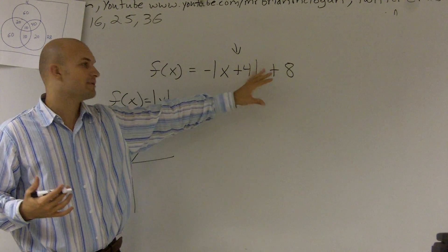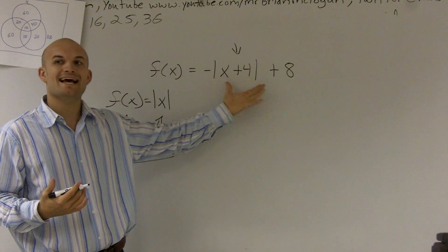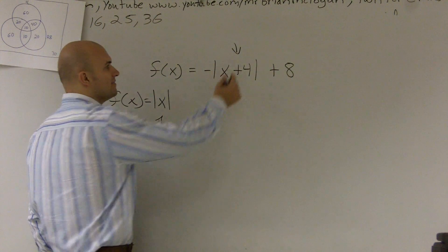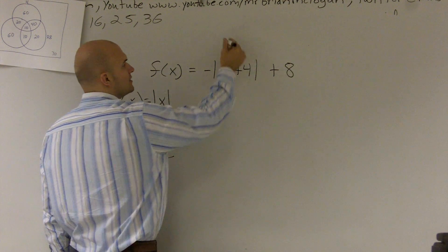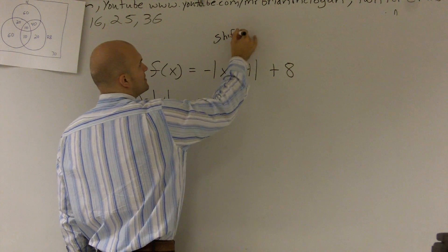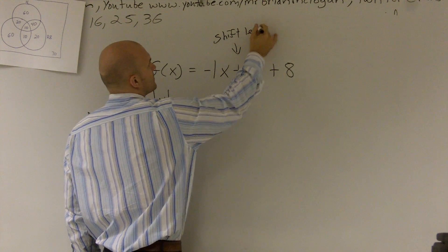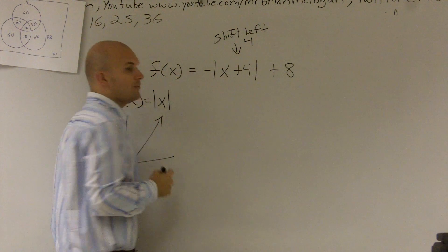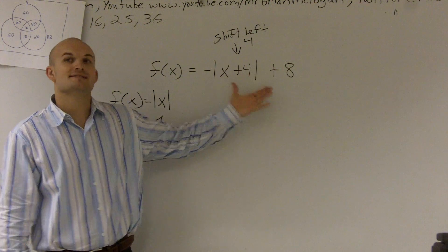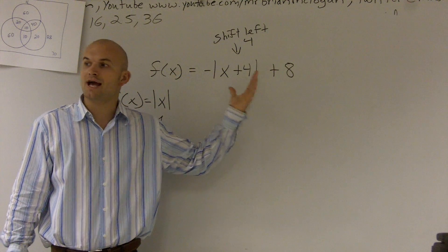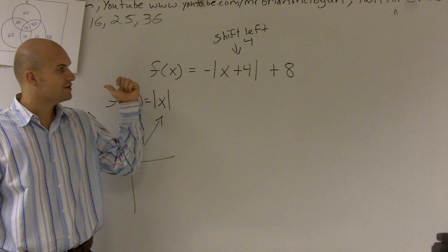Now we have all the stuff that's transformed it. Whenever we do something, anything inside of that function, that's messing with our x value. This is actually going to be shift left 4. And what they're doing, if you notice that, since it's inside the function, it's going to be shifting our x coordinates 4 units to the left.